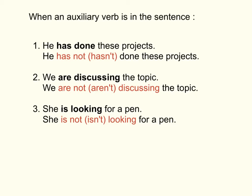Number three: She is looking for a pen. Looking for就是在找着，a pen在找着一支笔。那我们那个auxiliary verb找到出来就是is了，那所以我们将它转到否定的时候，就加个not字在后面，就变成了she is not，或者isn't looking for a pen. 她不是在找着一支笔。